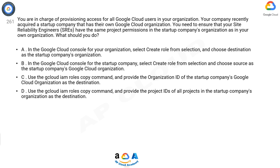A: In the Google Cloud Console for your organization, select 'Create role from selection' and choose destination as the startup company's organization. B: In the Google Cloud Console for the startup company, select 'Create role from selection' and choose source as the startup company's Google Cloud organization. C: Use the Cloud IAM roles copy command and provide the organization ID of the startup company's Google Cloud organization as the destination.